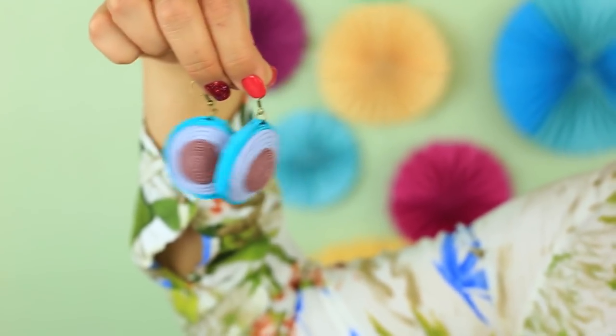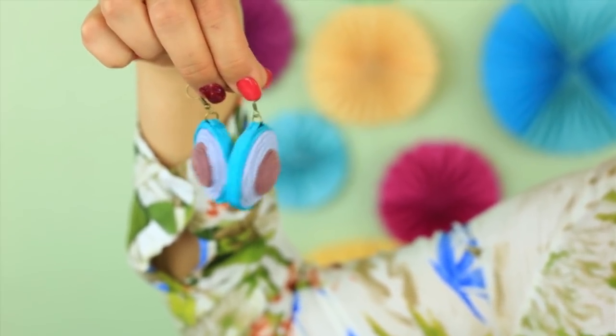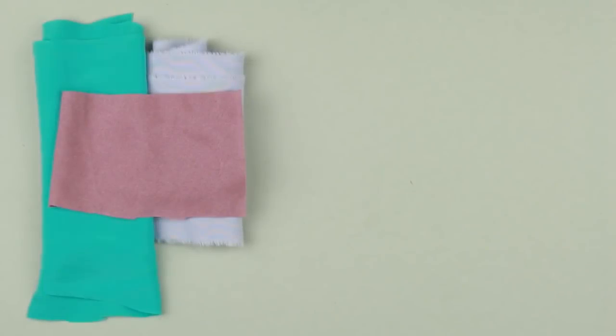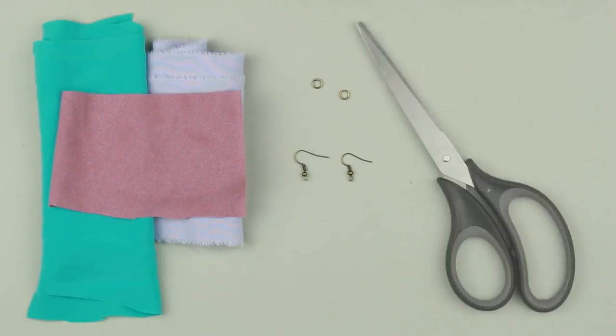This video is about how to make earrings from rolled fabric strips. We'll need fabric pieces of blue, turquoise, and ash pink colors, jump rings, French hooks, and scissors.